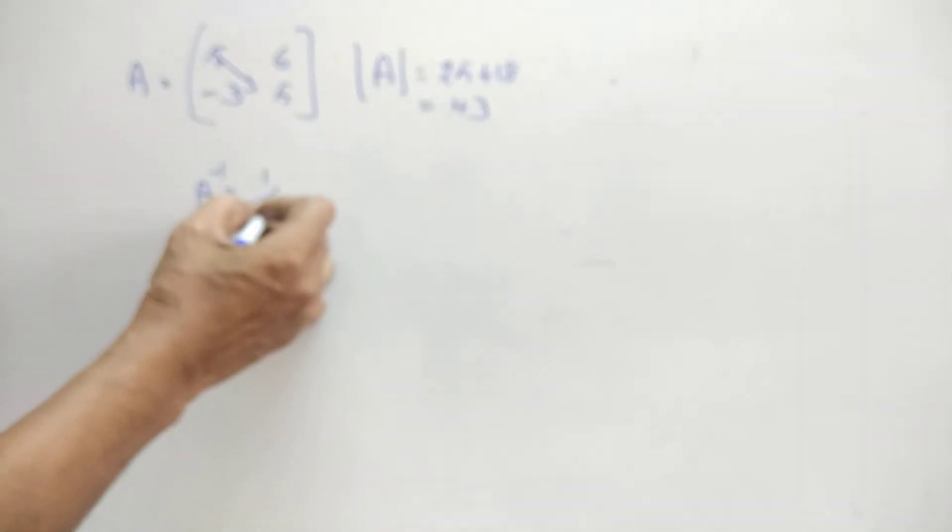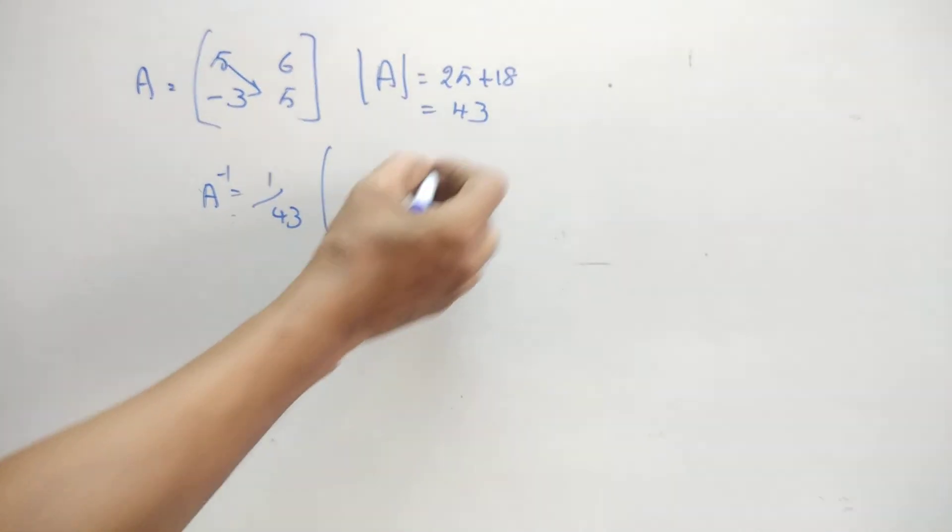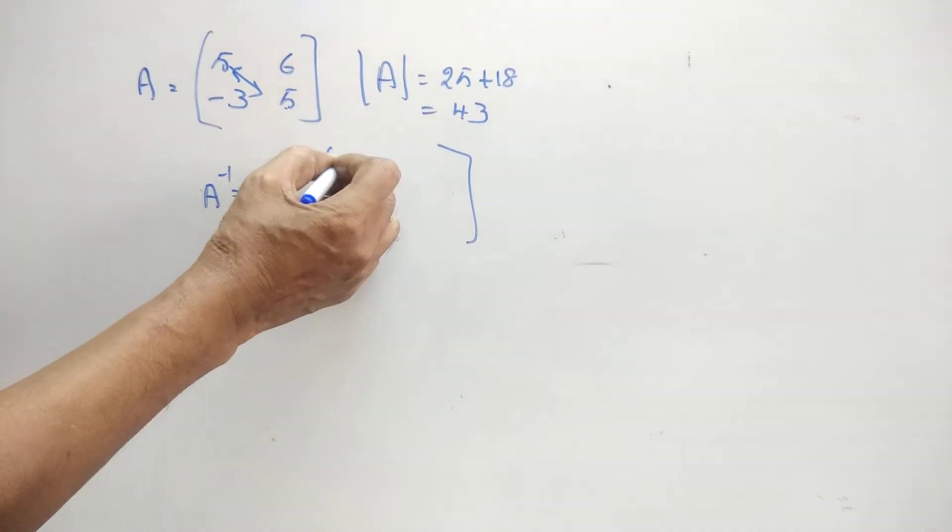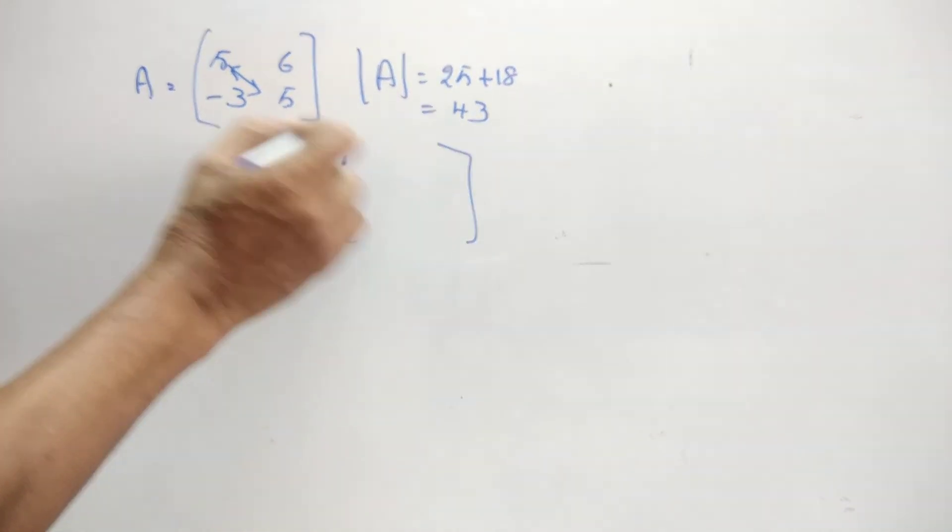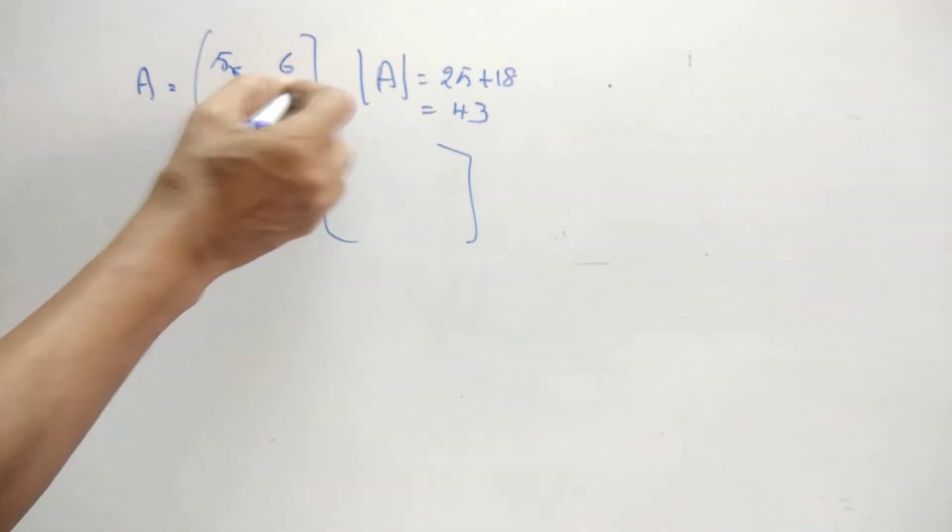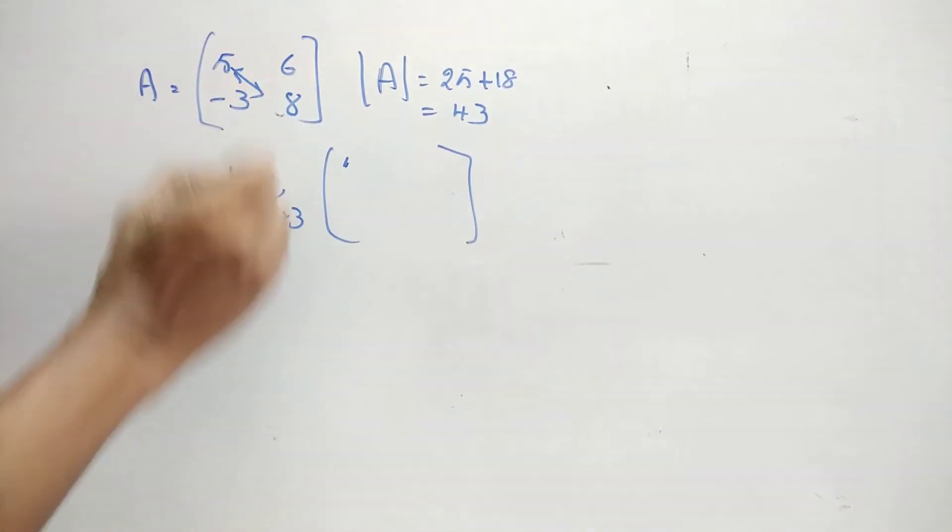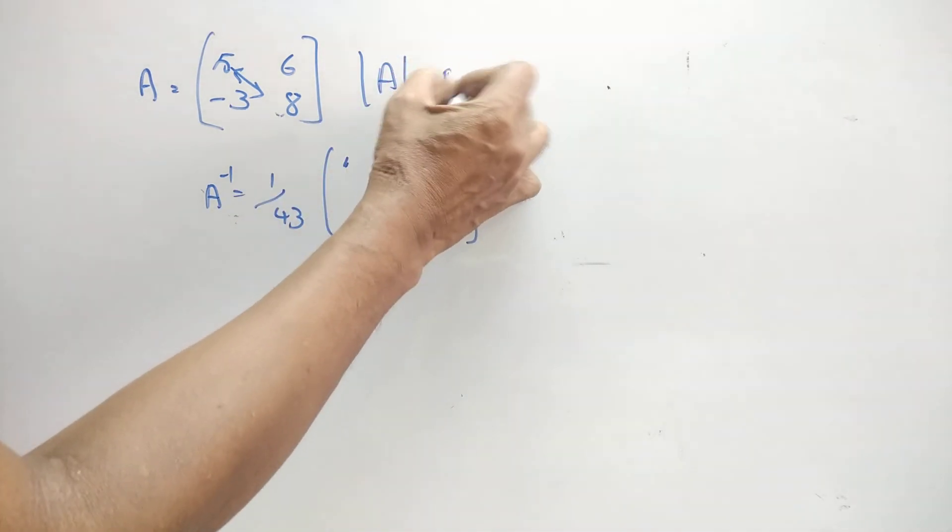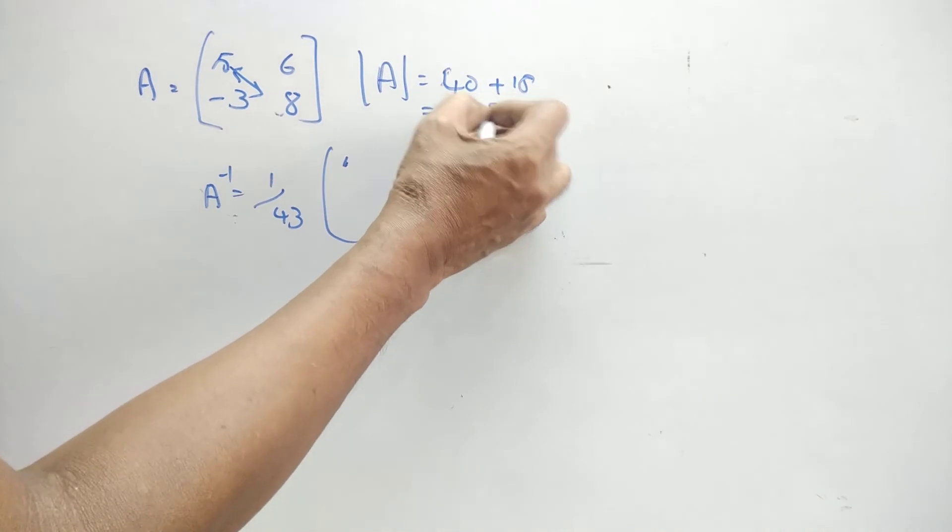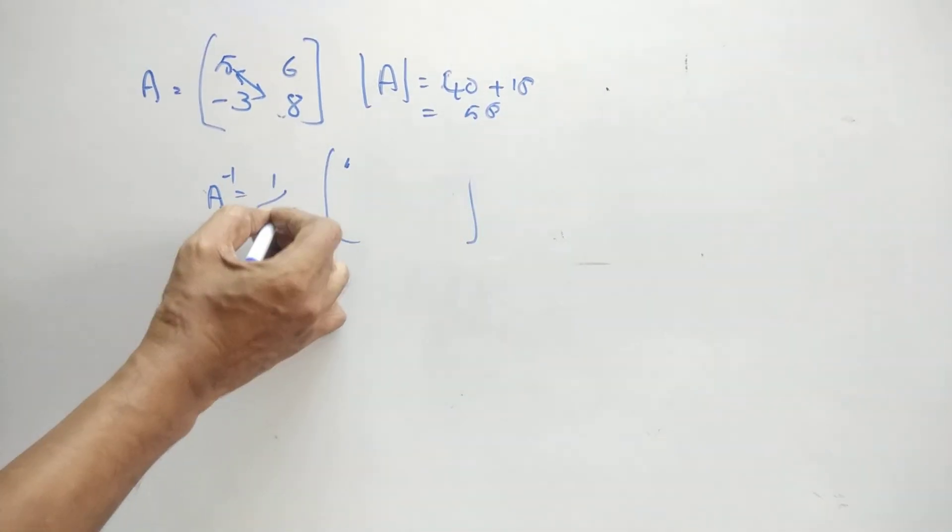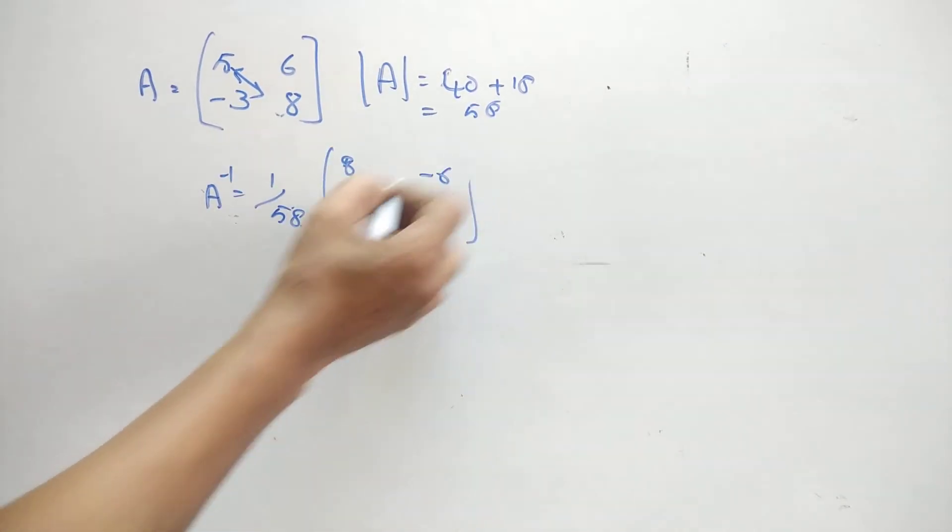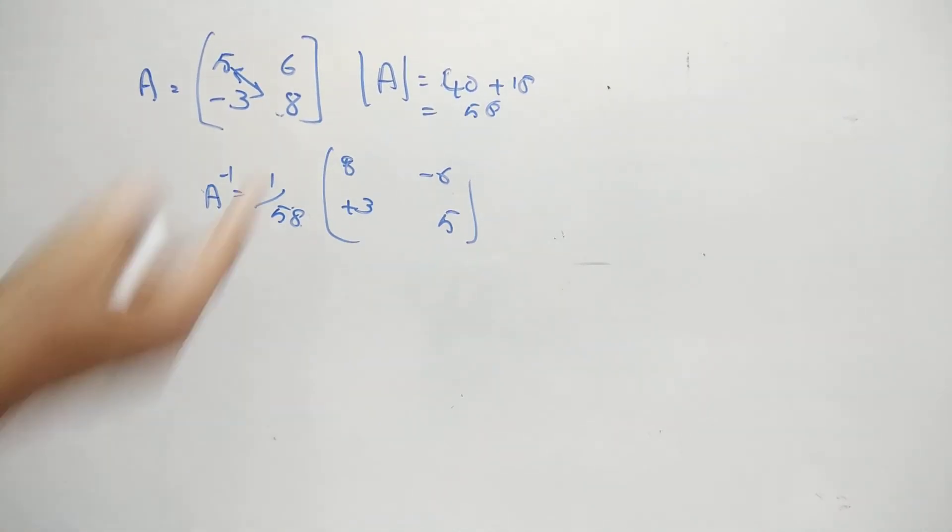Therefore, A inverse is 1 by 43 into adjoint matrix. For adjoint matrix, this will be interchanging. So, this 5, let me take something else. So instead of 5, I will take say 8, so that you can understand clearly. So 5, 8s are 40 and plus 18. So this is 58. That is the determinant value is 58. Now this will be interchanging, the sign will be changing here.